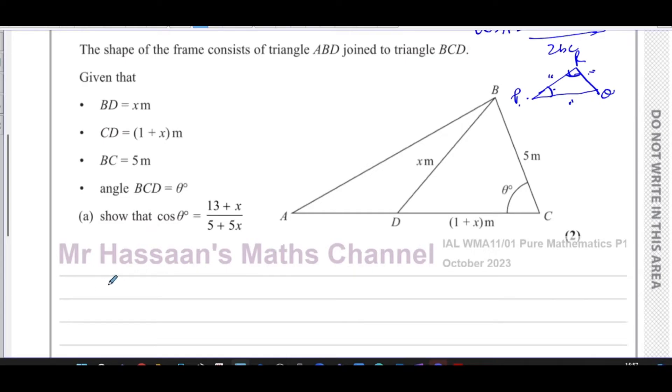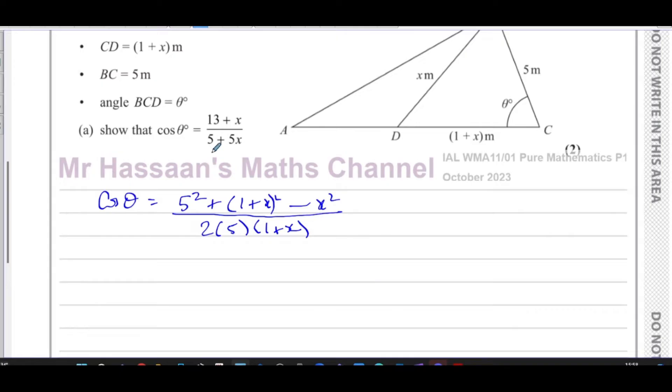We can say here that the cosine of theta is equal to, you take the two sides beside it, you have 5 squared plus 1 plus x squared in brackets minus the side opposite which is x squared over 2 times B times C. So it's 2 times 5 times 1 plus x. Hopefully this will simplify to exactly what we have here.